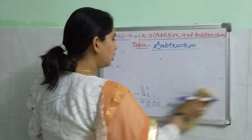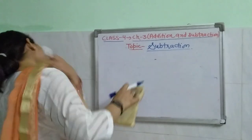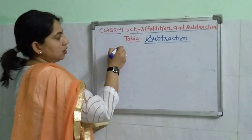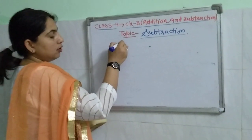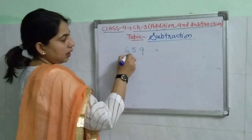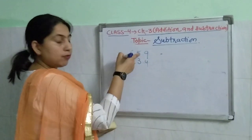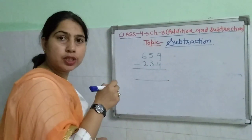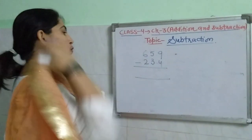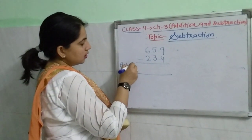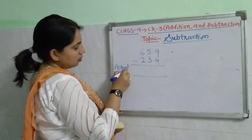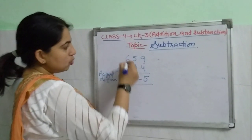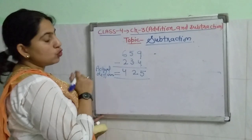Now, estimation of subtraction. Let two numbers be given: 6, 5, 9 and 2, 3, 4. If we have to find out both the actual subtraction and the estimated subtraction, first find the actual difference: 9 minus 4 is 5, 5 minus 3 is 2, 6 minus 2 is 4. So the actual difference is 425.